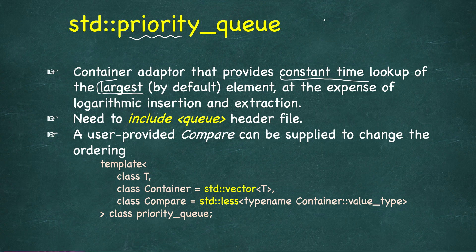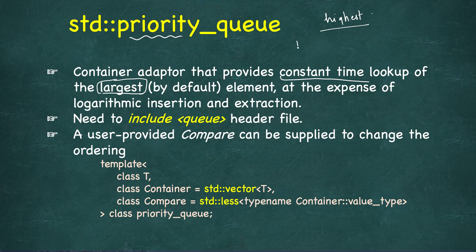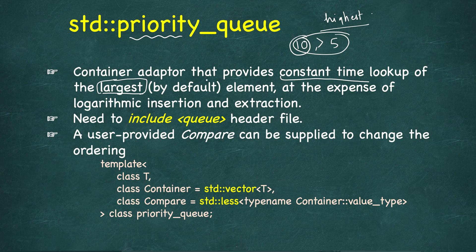You pick the element with the highest priority, and by default the highest priority is given to the largest element. By largest we mean we have a way of comparing the elements — for example, if we have integers 10 and 5, then 10 has higher priority. Although you can define your own priority by providing a custom compare function to specify which element has higher priority for your use case.